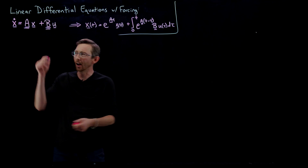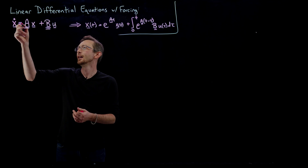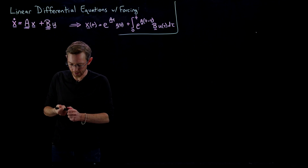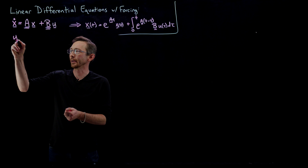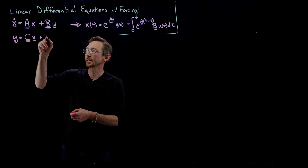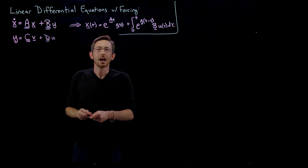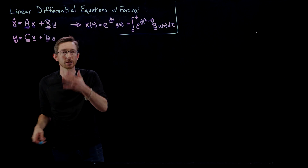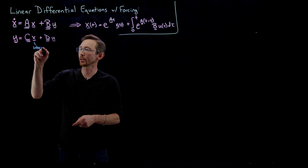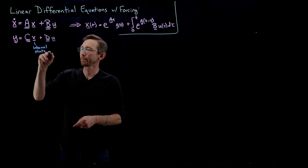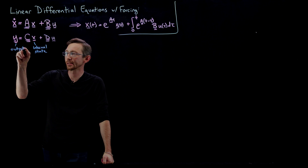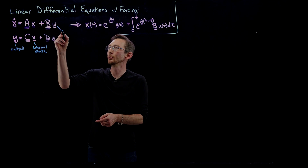A generic control system — a generic input-output system — is not just going to have the dynamical system or differential equation part. You'll also have an output state y, which generally can be a vector, equal to some matrix C times x plus another matrix D times u. So x is the internal state of your system, y is the measured or output state — whatever you can measure about the system — and u is the input, typically the control input you want to manipulate.